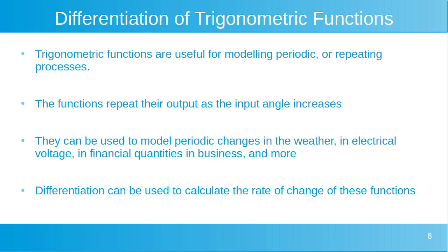Trigonometric functions are useful for modelling periodic or repeating processes. The functions repeat their output as the input angle increases, making them really useful for modelling variables that change periodically. Differentiation can be used to calculate the rate of change of these functions, so being able to calculate the rate of change of trigonometric functions within mathematical modelling is a really useful skill. This brings us to the end of the video — thank you for your time, and see you next video.